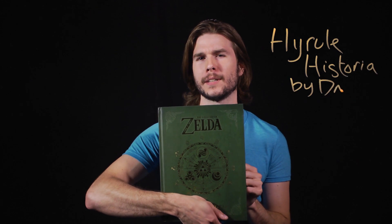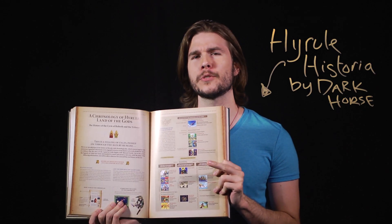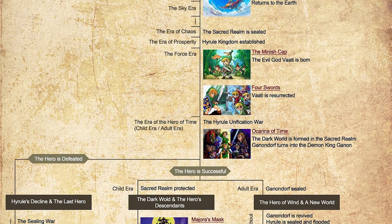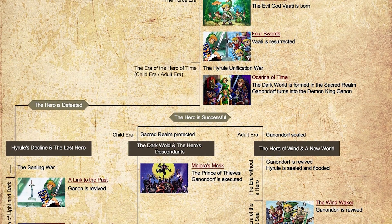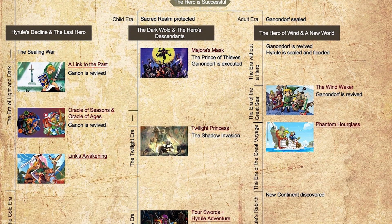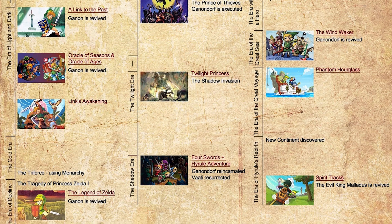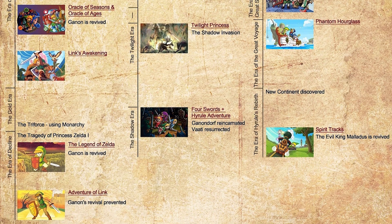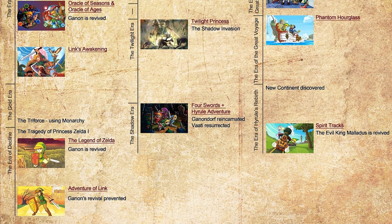According to this book, the main chronology in The Legend of Zelda is split into three different branches. We see that once the world of Zelda is created, it follows a singular path down to Ocarina of Time and then splits off into three.